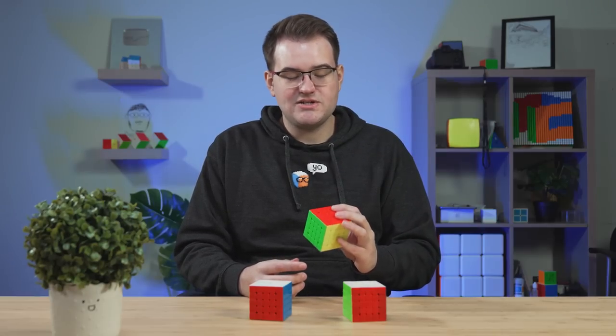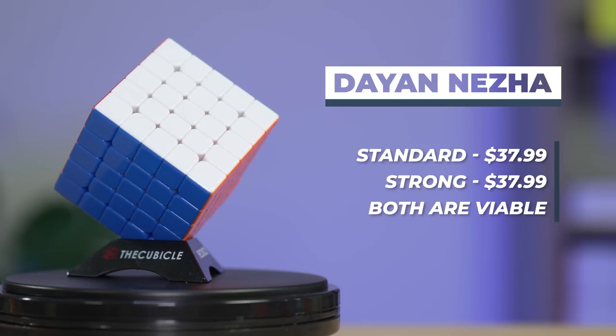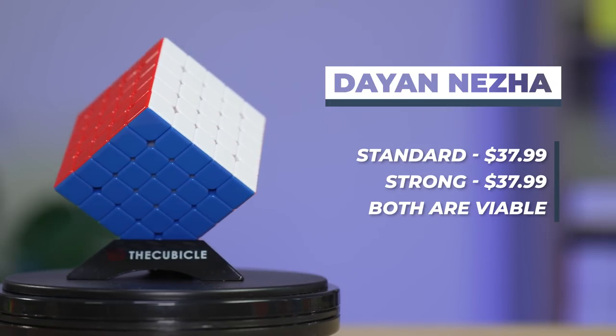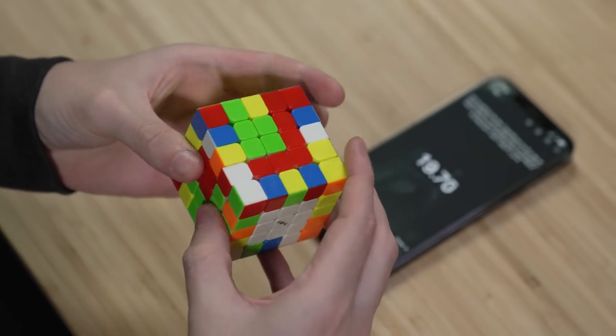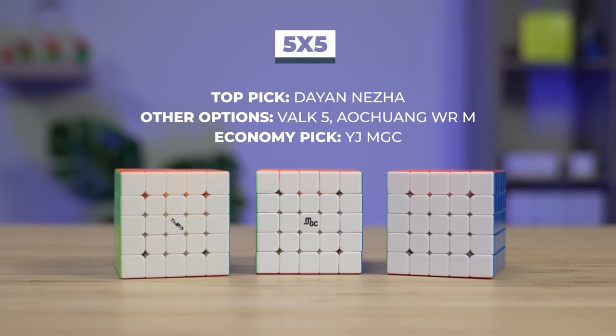Of all the 5x5s you can get, this is definitely up there for the best one. It comes in two versions, a light magnet version and a strong magnet version for $38. Honestly, there's really not that much of a difference between the two. So we also just want to make you guys aware of some other completely viable 5x5 options still in 2022. The Valk5 here is still really, really solid. A lot of pro cubers still use the Valk5. It's still a completely viable option. And we don't have it on this list, but the Outroong WRM is still completely usable. Still a really good option.